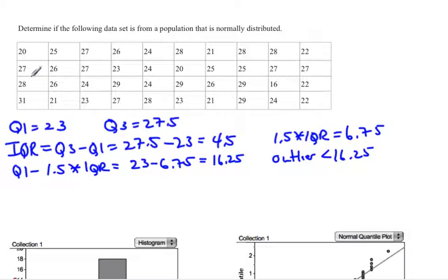Looking at the data, I'm looking for a number smaller than 16.25, and I notice we do have one number smaller than that. So we have one outlier so far.